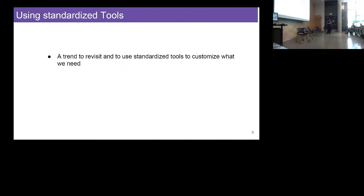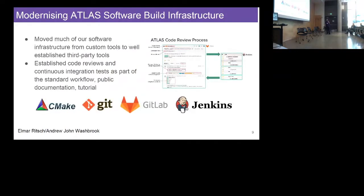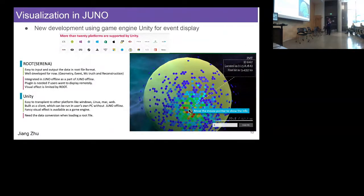There is a trend trying to revisit and use standardized tools to customize what we need. In Atlas we have a major migration to more industry-supported common tools — for example, CMake, Git, GitLab, and Jenkins. Furthermore, we have established a code review process, reviewing code quality and controlling what we merge into GitLab. This way we can improve development and reduce the latency of maintenance on a longer timescale.